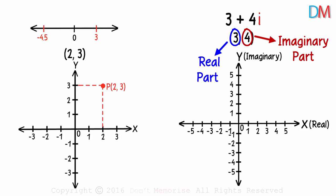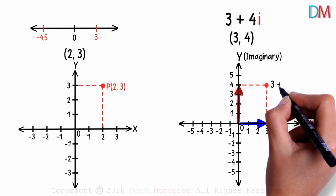Remember, the horizontal axis is the real axis and the vertical axis is called the imaginary axis. So three units right on the real axis and four units up on the imaginary axis will give us the position of the complex number on this plane.